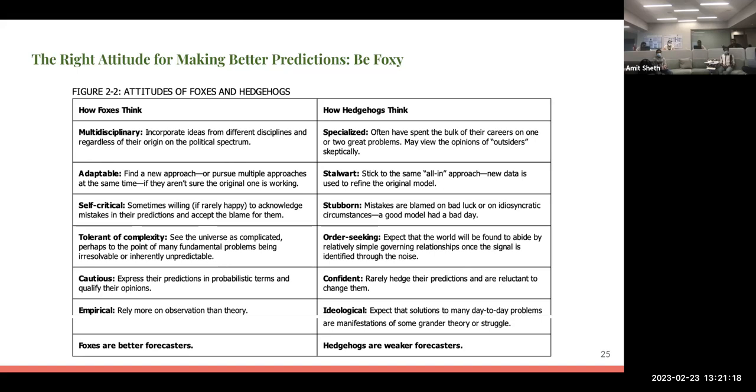Whereas hedgehogs are specialized on certain domains and they are stalwart. They make stubborn decisions and are overconfident in their decisions. They don't like to change their views or how they believe on certain things, and they are ideological. He says that foxes are better forecasters than hedgehogs.